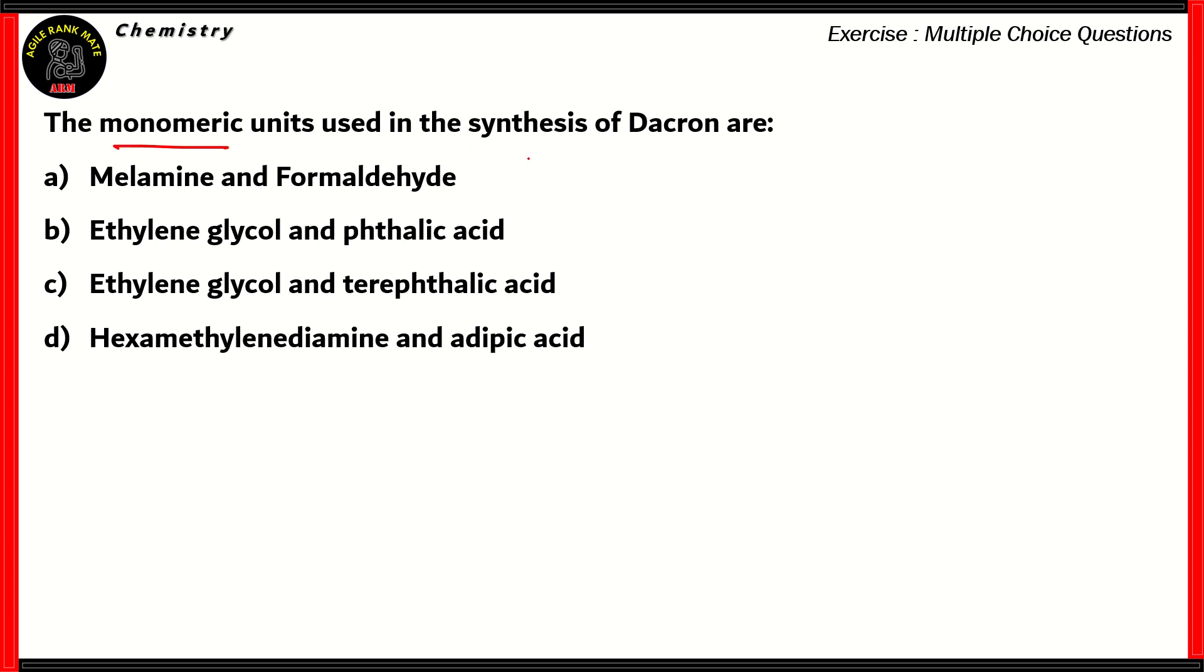The monomeric units used in the synthesis of Dacron are melamine and formaldehyde, ethylene glycol and phthalic acid, ethylene glycol and terephthalic acid, hexamethylene diamine and adipic acid. So how do we solve this question? Well, let's look at the options.